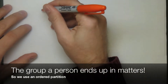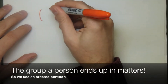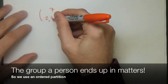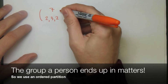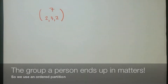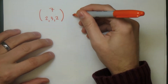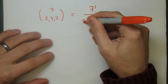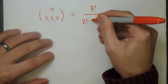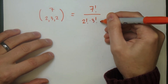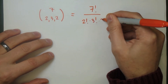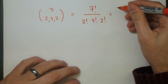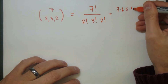How many ways can we award the prizes? Because it matters which group a person ends up in, we're going to use an ordered partition. We have 7 people, with 2, 3, and 2 being the number of people that go into each group. So the number of ways is the multinomial coefficient: 7 factorial over 2 factorial times 3 factorial times 2 factorial.